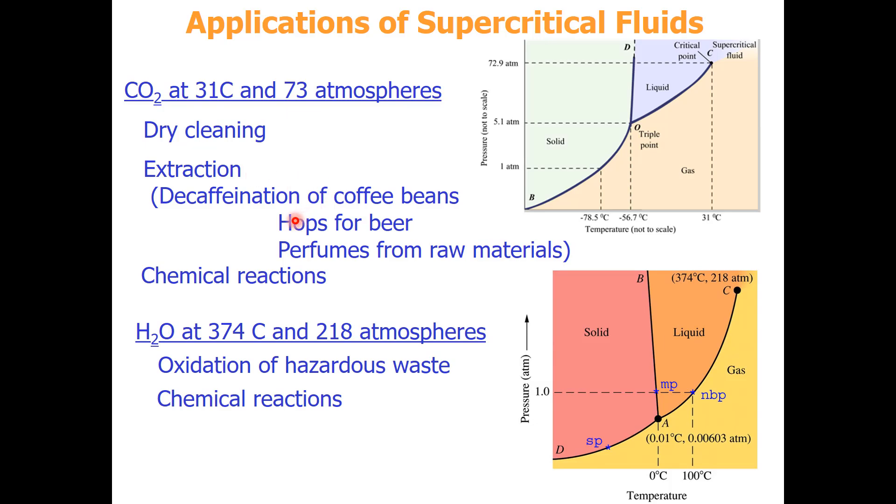For example, removing caffeine from coffee beans or producing hops for beer or perfumes from raw materials, and also for chemical reactions. Supercritical water can be achieved at 374 degrees Celsius and 218 atmospheres. This can be used in water treatment plants for the oxidation of hazardous waste, and I personally have worked for a company doing chemical reactions in near-supercritical water and near-supercritical carbon dioxide.